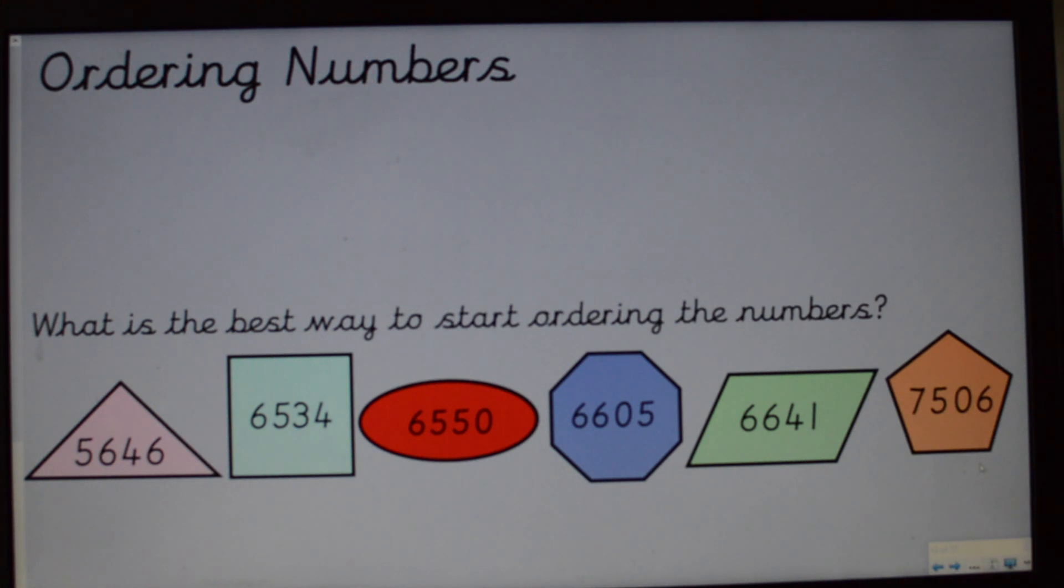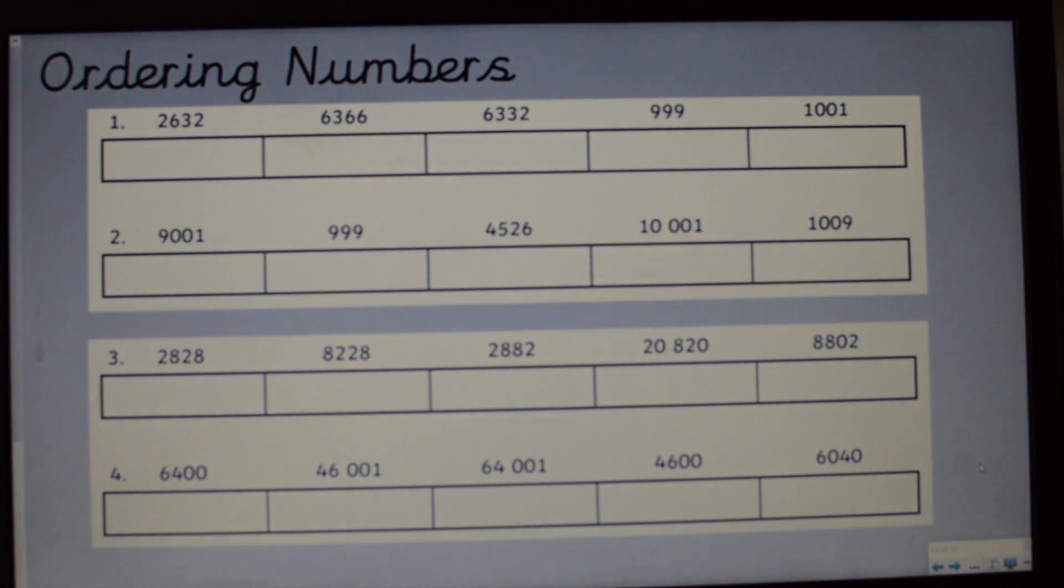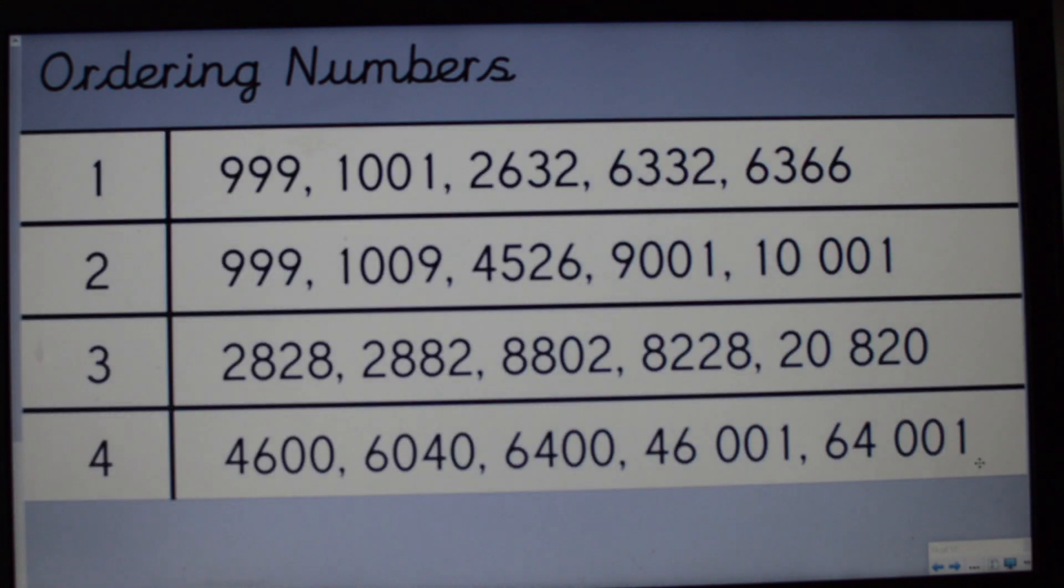Okay, so now it's your turn. You're going to have a go at ordering some numbers. Pause the screen so it gives you a chance to have a go. Okay, how did you get on? Did you get them all in the correct order? Hopefully some of these challenged you, because when we've got the same digits but in a different order, it does need us to have a little think about what is the bigger number. Did you spot the error in question three? 8,228 is smaller than 8,802. They're the wrong way round.